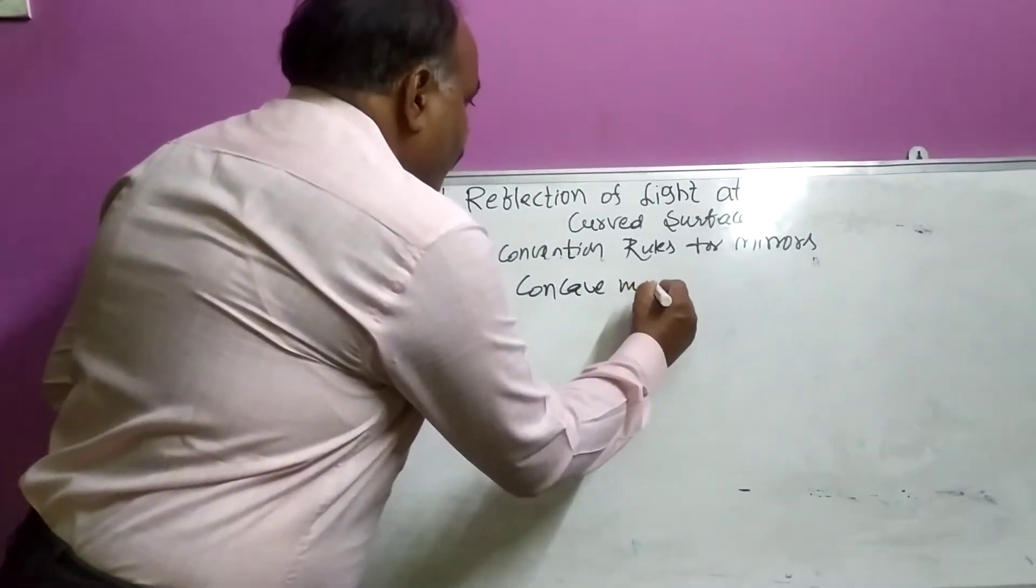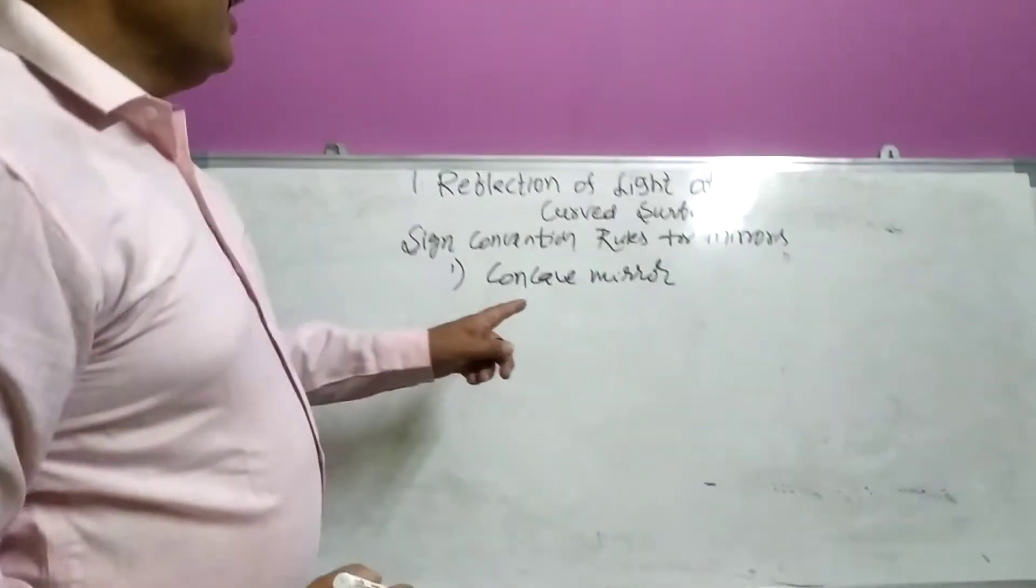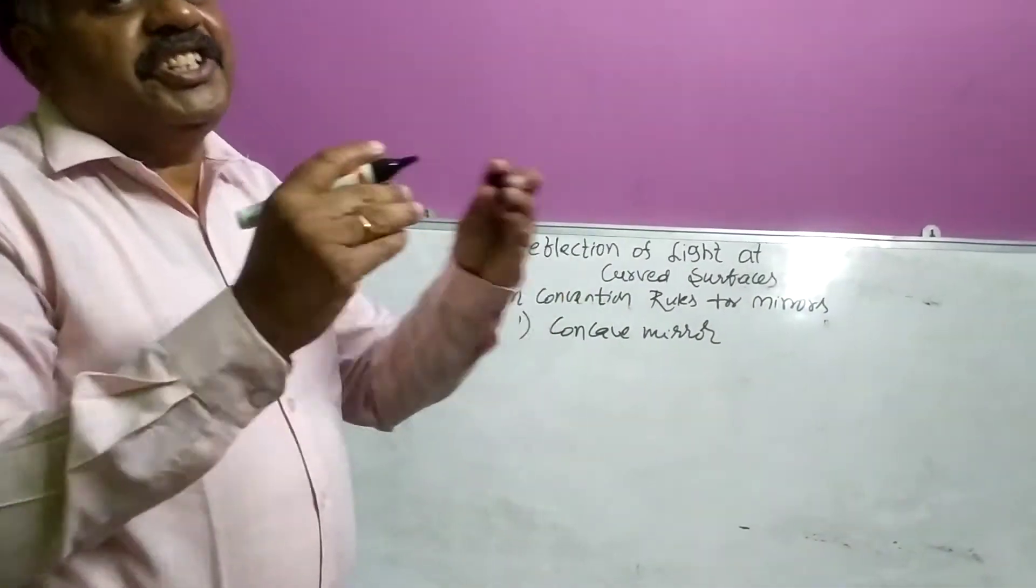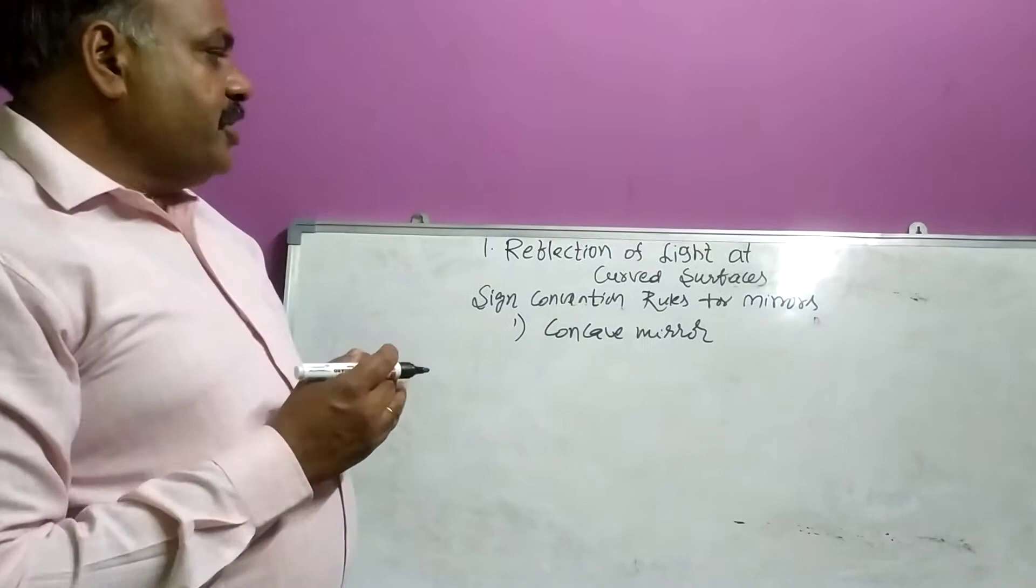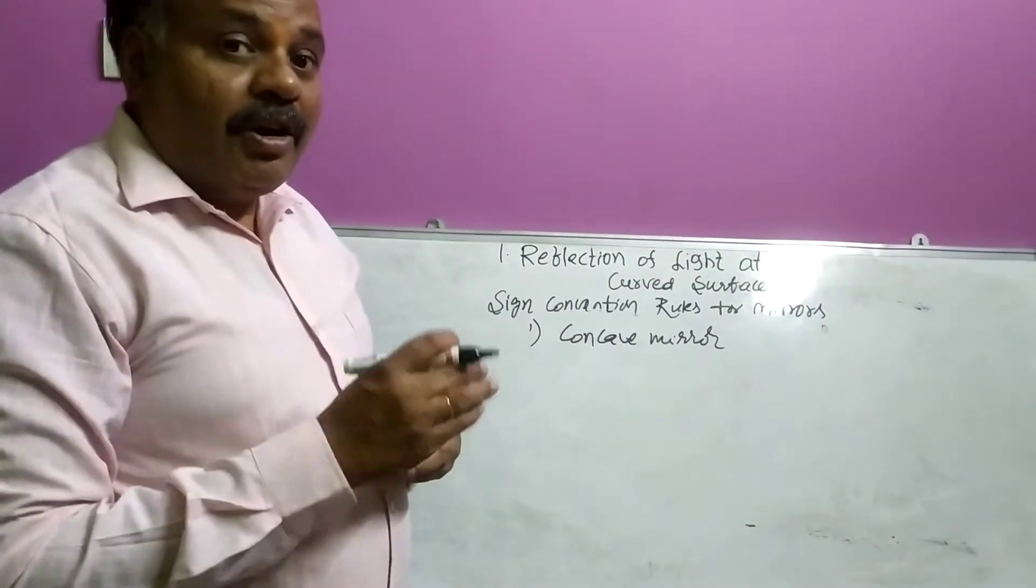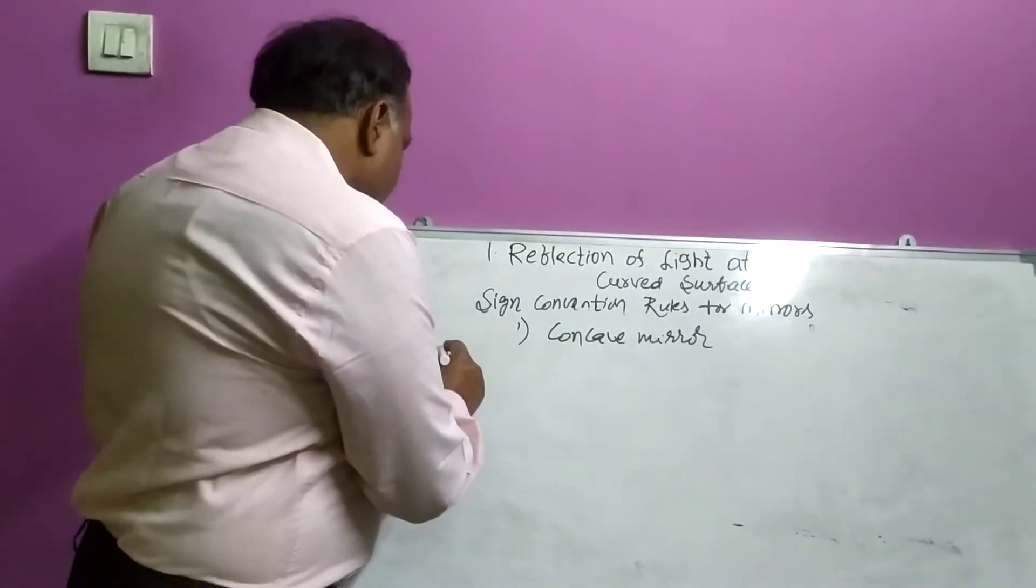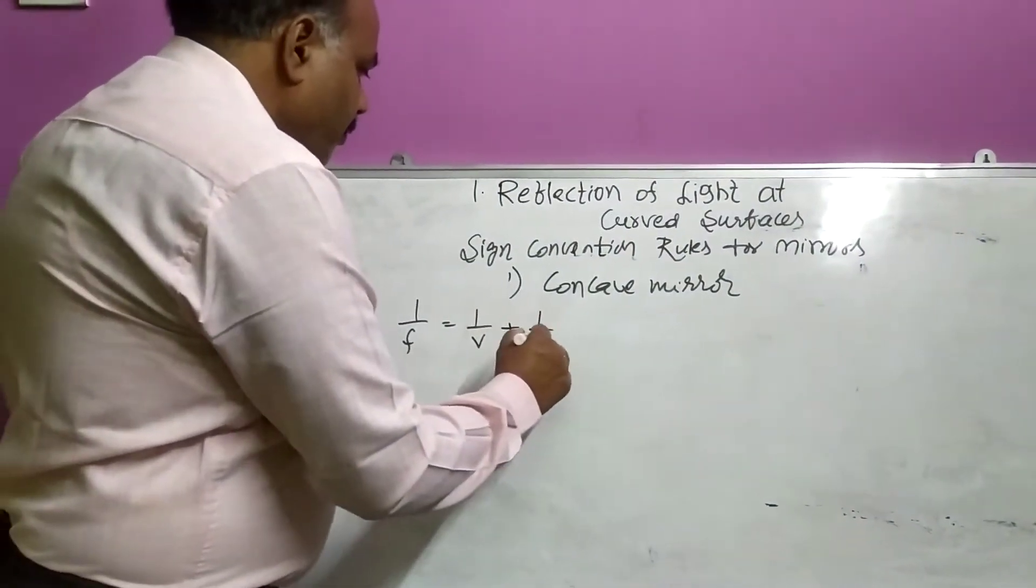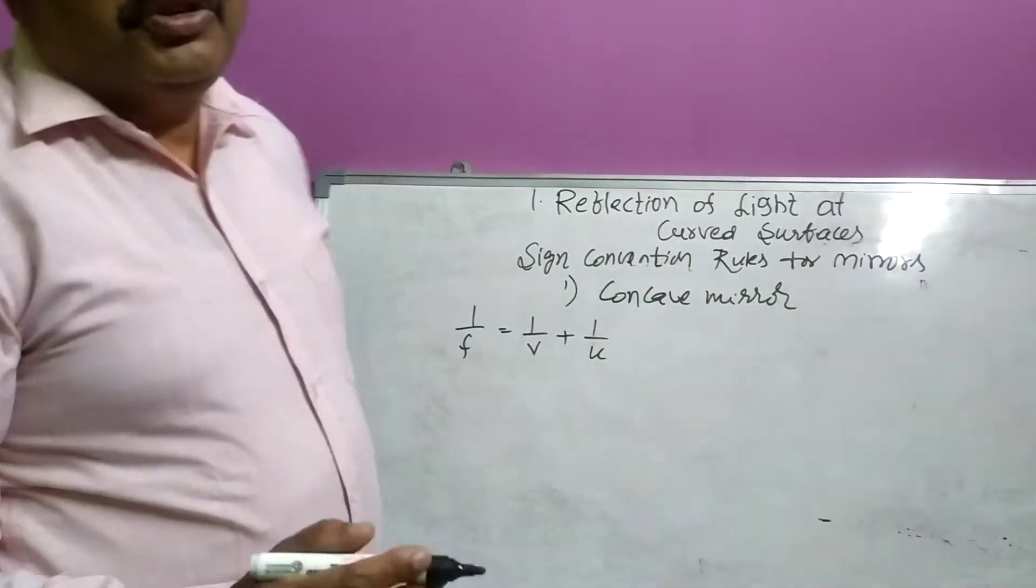How we apply the sign convention rules for concave mirror for particular situation. My dear children, all of us know what is mirror formula. Mirror formula is 1 by F is equal to 1 by V plus 1 by U.